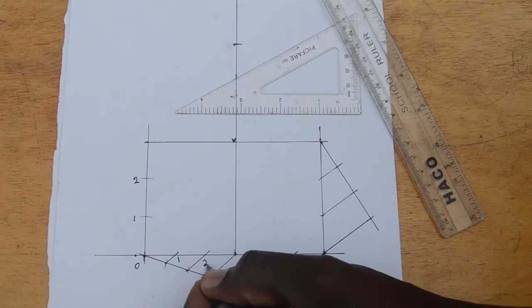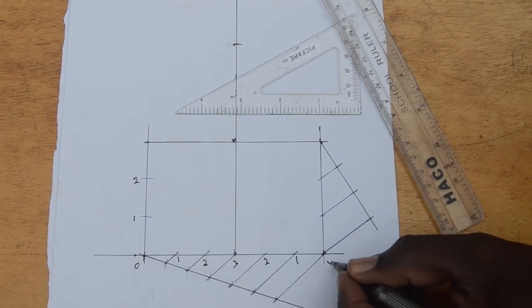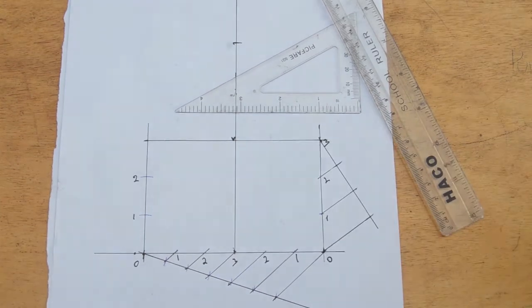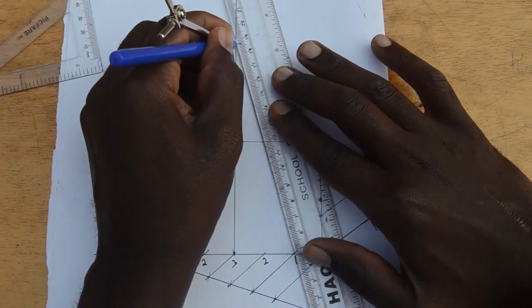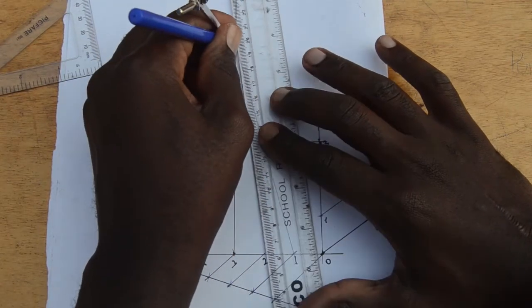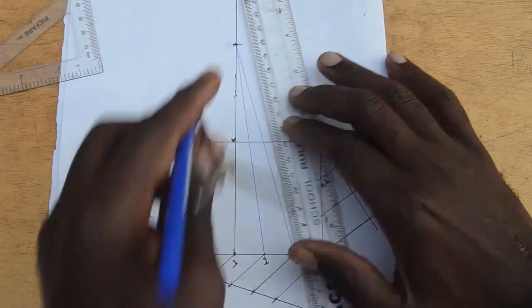Label the points as seen for easy marking and identification. Join the points along the span to the transverse axis.